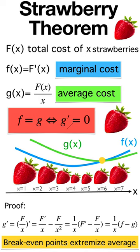then f equals g if and only if g prime is equal to zero. In other words, break-even points are critical points of g.